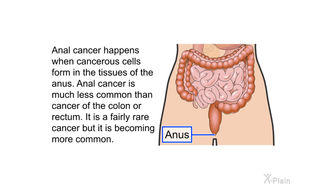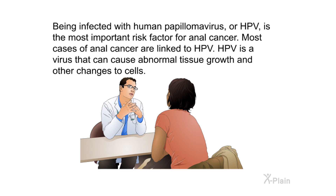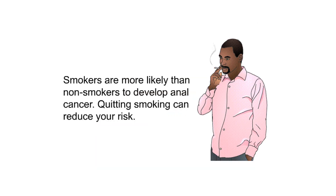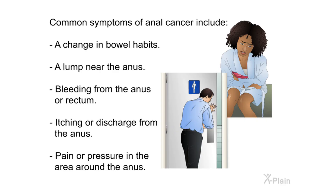In summary: anal cancer happens when cancerous cells form in the tissues of the anus. It is much less common than cancer of the colon or rectum — fairly rare, but becoming more common. Being infected with HPV is the most important risk factor; most cases of anal cancer are linked to HPV, a virus that causes abnormal tissue growth. Smokers are more likely to develop anal cancer, and quitting smoking can reduce your risk. Common symptoms include a change in bowel habits, a lump near the anus, bleeding from the anus or rectum, itching or discharge, and pain or pressure around the anus.